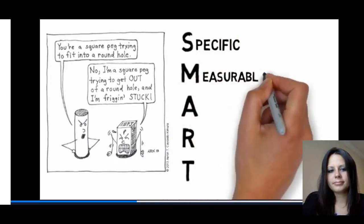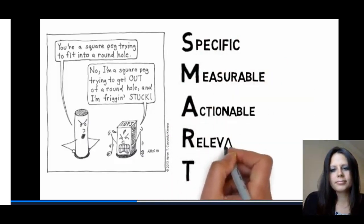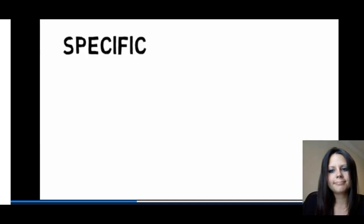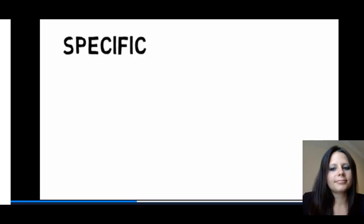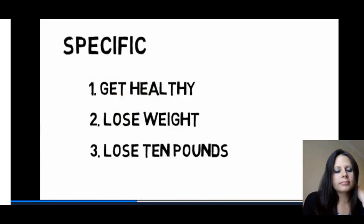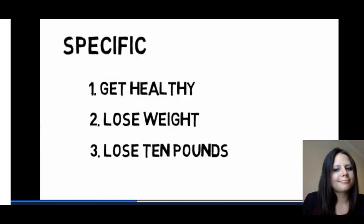SMART stands for specific, measurable, actionable, relevant, and time-bound. SMART begins with asking yourself the degree to which a goal is specific — arguably the most important part of establishing or evaluating a goal. The less specific a goal, the more difficult it is to determine how long the goal should take or how to measure success. Consider the difference between 'get healthy' versus 'lose weight' versus 'lose 10 pounds' — the goal to get healthy is much less specific than a goal to lose 10 pounds.